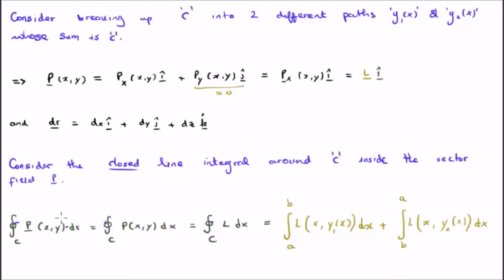So, we're going to take P dot dr, but of course, P only has an i hat direction, dr has an i j k hat direction, so the dot product will only be in the i hat direction.